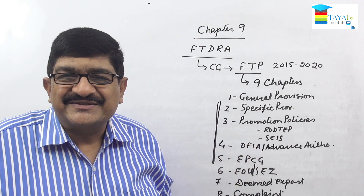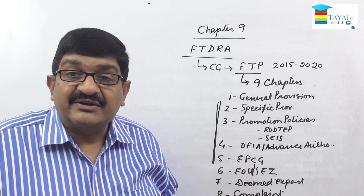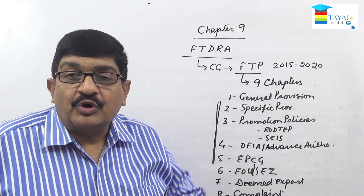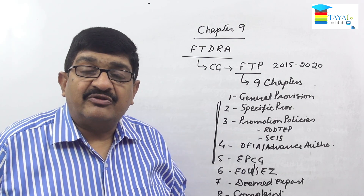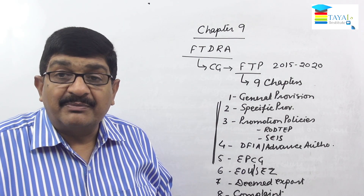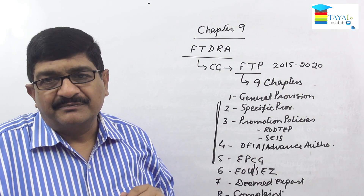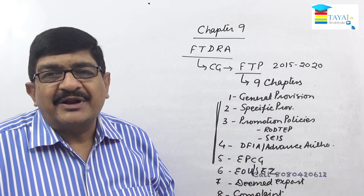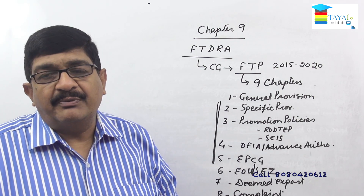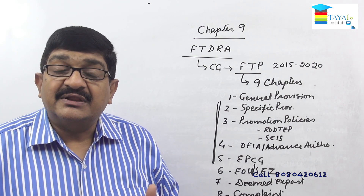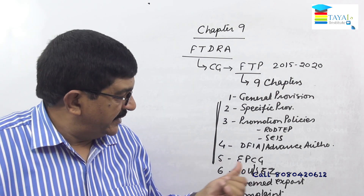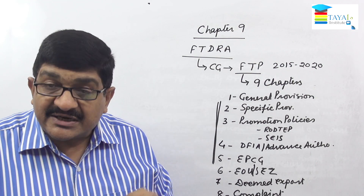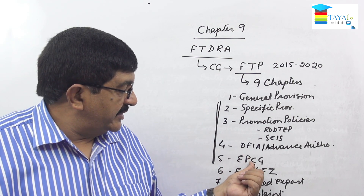Under the RoDTEP scheme, goods exported receive incentives in the form of refund of local duties and taxes. The SEIS provides incentives on the value of services exported. Under DFIA (Duty Free Import Authorization) and Advance Authorization, the import of raw materials and consumables is allowed for manufacture of goods for export. Advance Authorization means import comes first and manufacture follows, while DFIA means export comes first and import comes later. The EPCG scheme is for capital goods required for export.